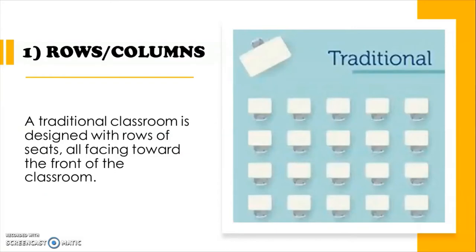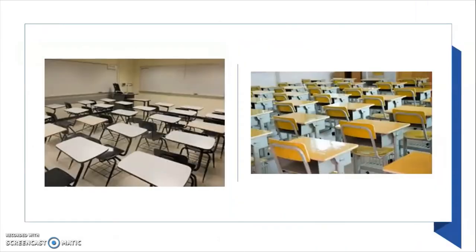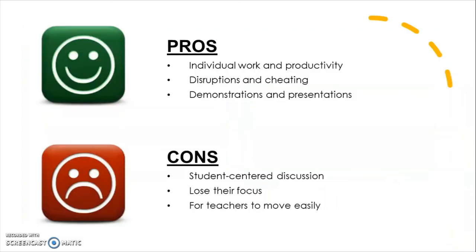The first one is rows or columns. A traditional classroom is designed with rows of seats all facing toward the front of the classroom. This is used most of the time in higher education when students have to listen to their teacher. The teacher can't give one-on-one feedback easily because it's hard to reach students in the middle. Pros: it encourages individual work and productivity, minimizes disruptions and cheating, and is effective for demonstrations and presentations. Cons: it discourages student-centric discussion and group work, it's easier to lose focus, and it's difficult for teachers to move easily from student to student.